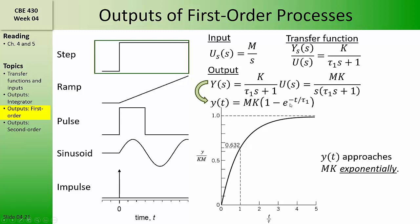Because these are exponentials, in one time constant tau, they should reach 63 percent of the final steady state. Exponential decays reach about 85 percent of their final steady state in 2 tau, 95 percent after 3 tau, and over 99 percent of the final steady state after 5 tau.